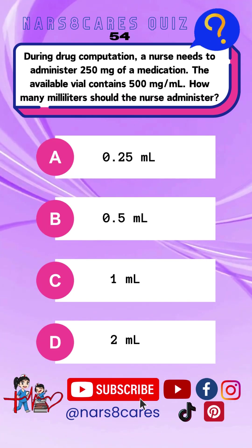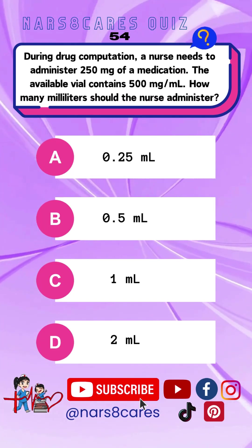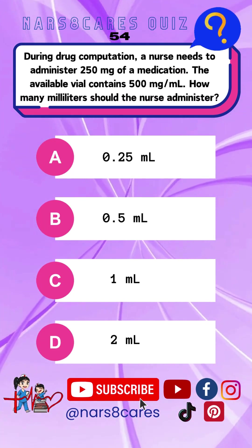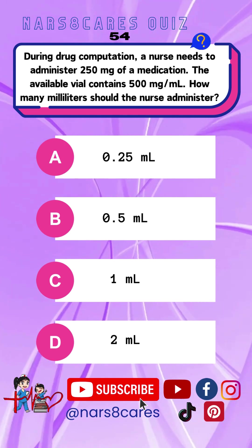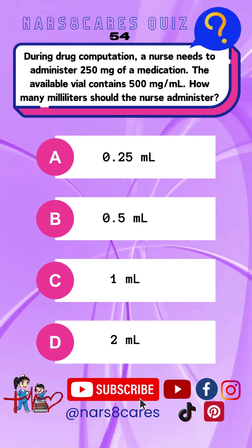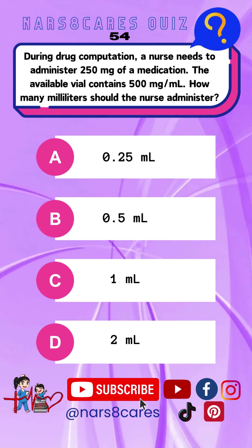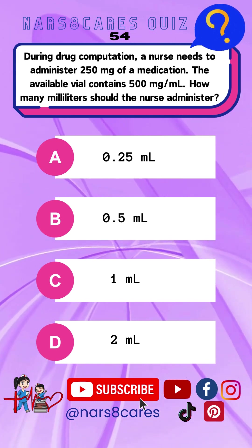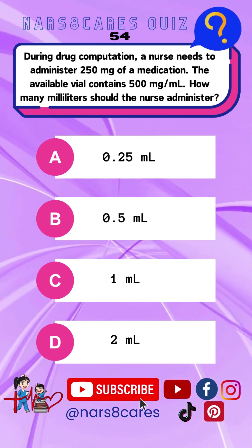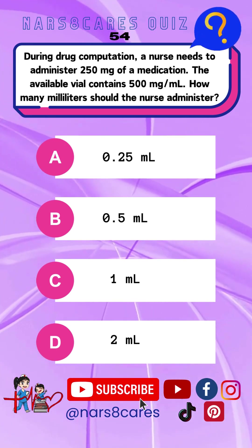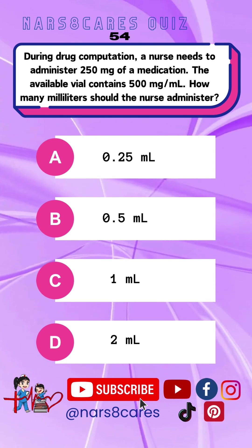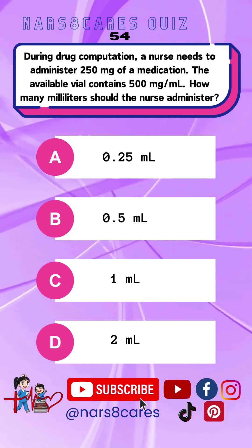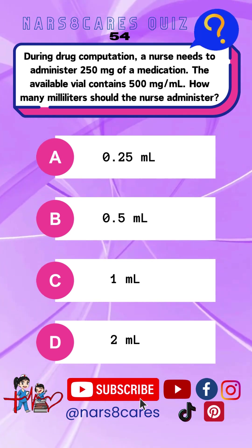54. During drug computation, a nurse needs to administer 250 mg of a medication. The available vial contains 500 mg per ml. How many milliliters should the nurse administer? A. 25 ml. B. 5 ml. C. 1 ml. D. 2 ml.